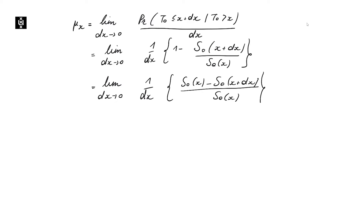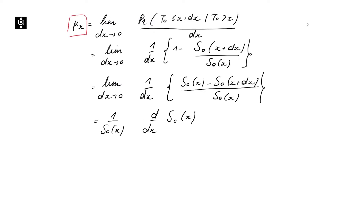What we recognize here is the definition of a derivative — more particularly a negative derivative — and we end up with the following expression: the force of mortality of a zero-year-old is one divided by the survival function, multiplied by minus the derivative with respect to X of S₀ evaluated at X. That's the first expression we obtained last Monday.